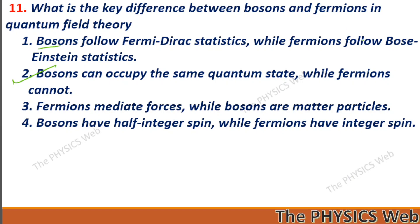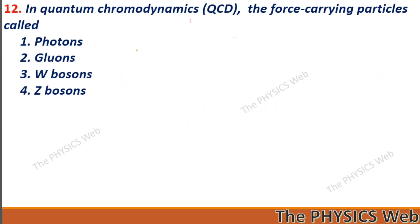Bosons follow Bose-Einstein statistics and fermions follow Fermi-Dirac statistics. Bosons have integer spin and fermions have half-integer spin. Next, question twelve: in quantum chromodynamics, the force-carrying particles are called gluons. So, two is your correct option.